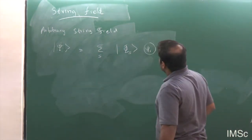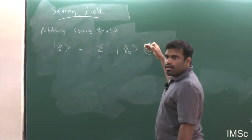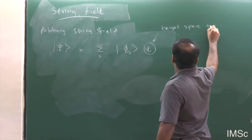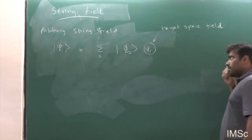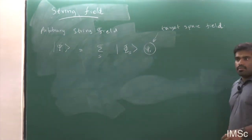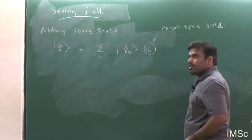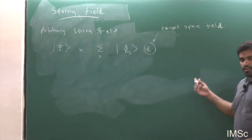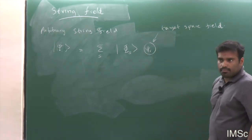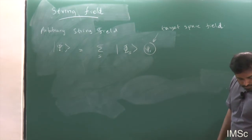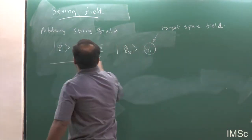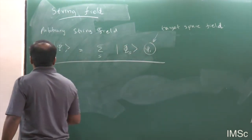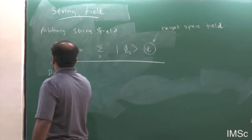The coefficient is a function of space time variables, and this coefficient is what you call a target space field — the kind of field you usually see in quantum field theory, like a graviton or a photon. The thing that comes from the world sheet Hilbert space is the state φ_S, and the coefficient ψ_S is the target space field, which depends on time and space time coordinates.